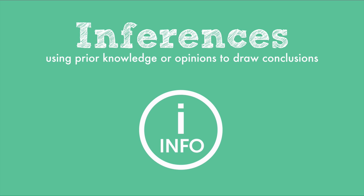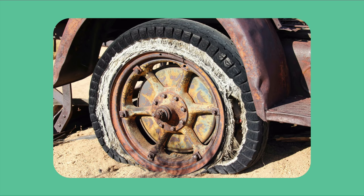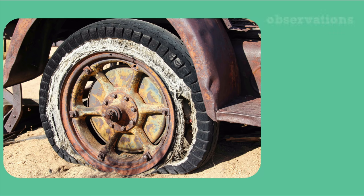Let's look at a scenario where we can make observations and inferences. Look at this picture. There are definitely visual observations that we can make. This looks like a tire and it's flat. There also appears to be rust and sand beneath the tire. Those all fall under the category of observations.